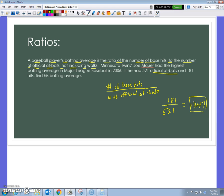So, that's just basic understanding how a ratio works. It compares two things, and it does matter which number is on the top. Make sure you get the 181 on the top and the 521 on the bottom.